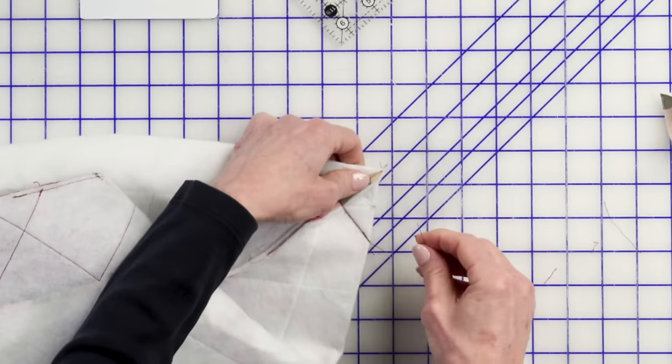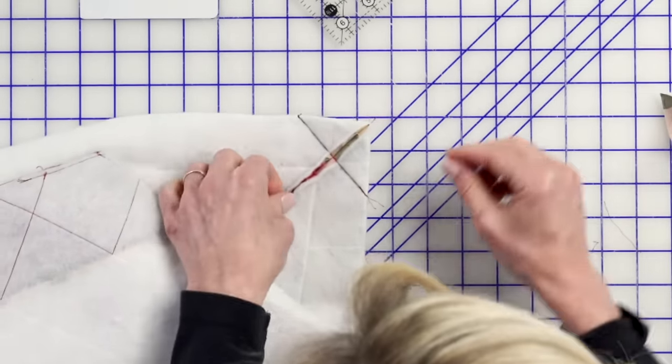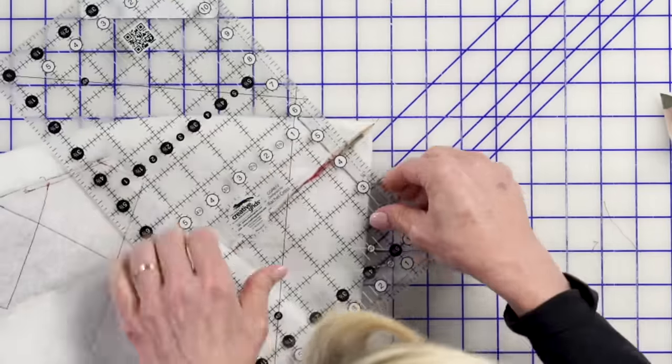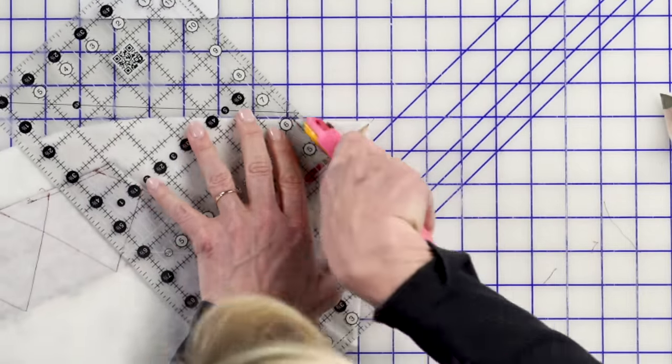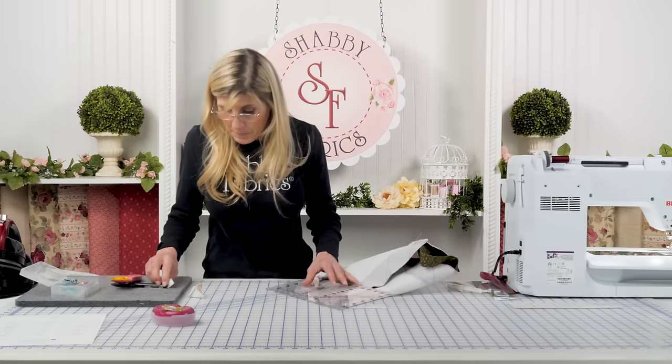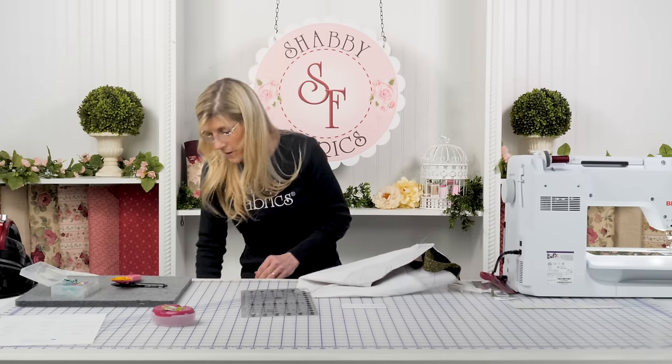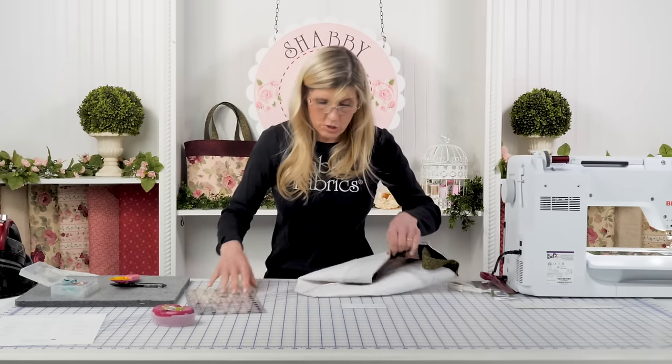Now, with your lining fabric, you're doing the exact same process. Of course, you're not attaching any handles to it, but you're boxing the corners. You're sewing the sides up just like we did, and you're boxing the corners just like you saw me do.